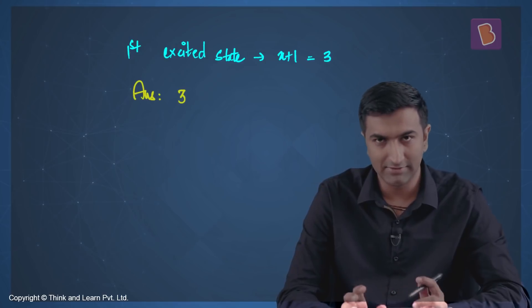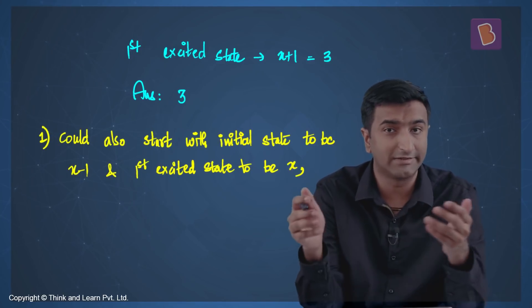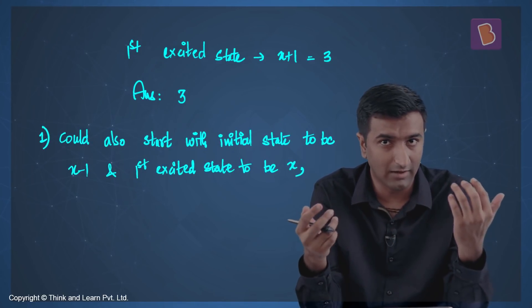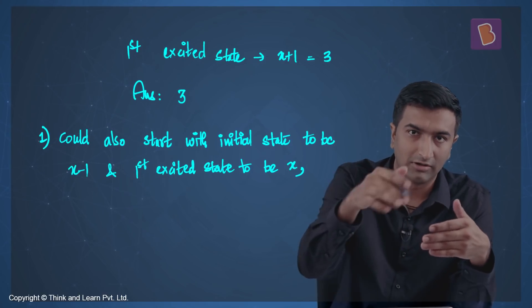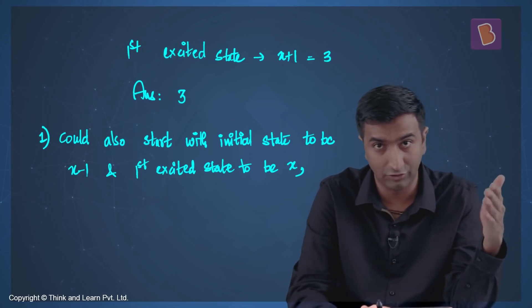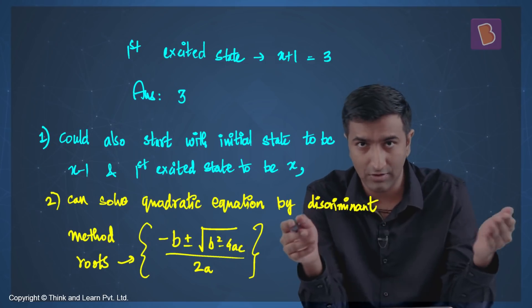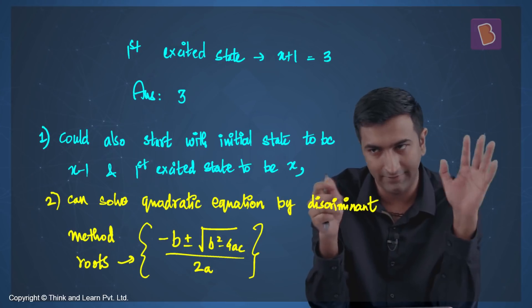A wrap-up idea: you could also start with the initial state as x−1, so whatever x you get is the direct answer. You could also solve the quadratic using the discriminant — the b ± √(b²−4ac) approach — but that wasn't necessary since it's a simple factorization. Either way, the answer is 3.